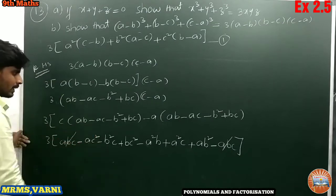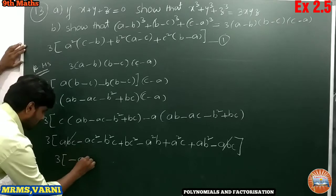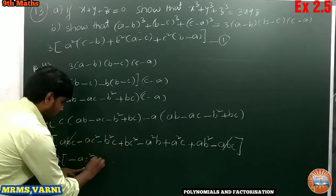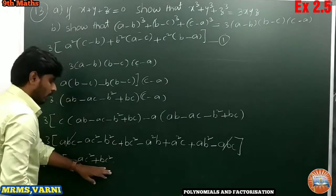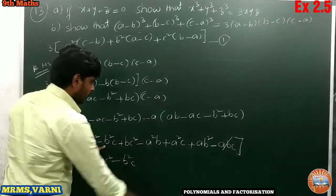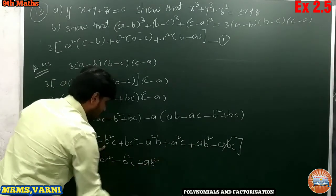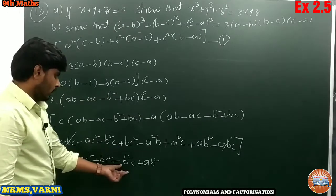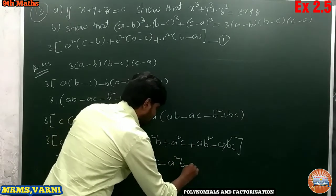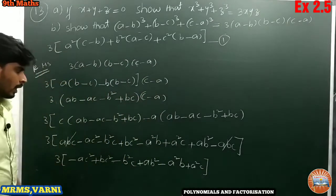The remaining terms after cancellation are 3 into: minus ac squared plus bc squared minus b squared c plus ab squared minus a squared b plus a squared c. I am now arranging these terms according to their squared variable groups — first c squared terms, then b squared terms, then a squared terms.